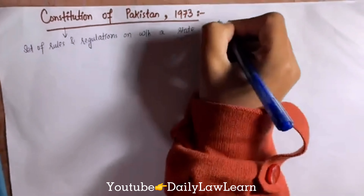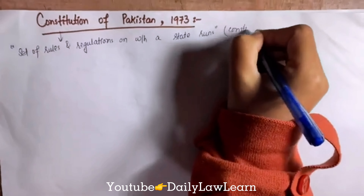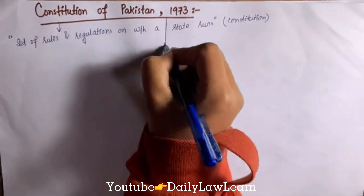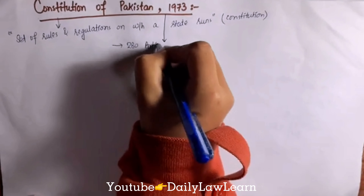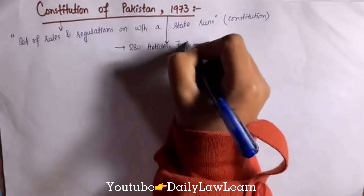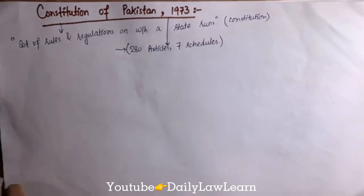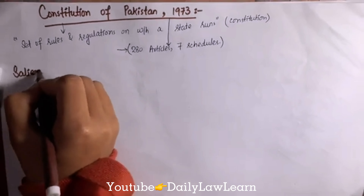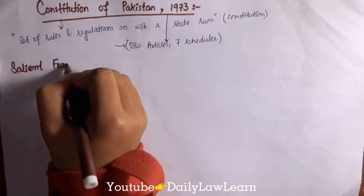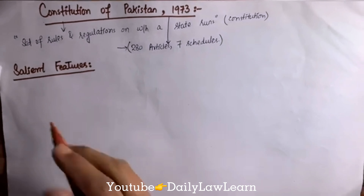The constitution means that set of rules and regulations on which a state runs. The Constitution of Pakistan 1973 consists of 280 articles and 7 schedules. Moving towards the salient features — salient features mean basic, main features of the constitution.